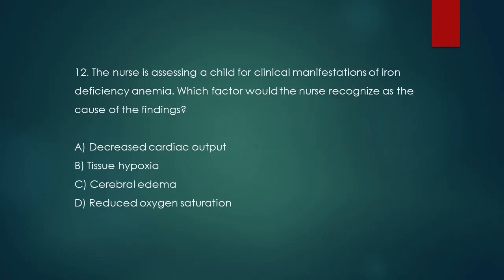Question 12. The nurse is assessing a child for clinical manifestations of iron deficiency anemia. Which factor would the nurse recognize as the cause of the findings? A. Decreased cardiac output. B. Tissue hypoxia. C. Cerebral edema. D. Reduced oxygen saturation.